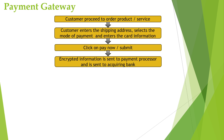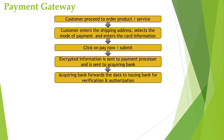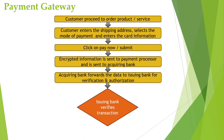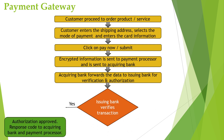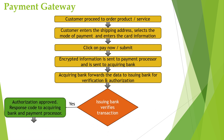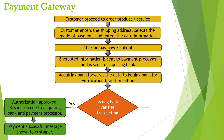Next, the acquiring bank forwards the information to the issuing bank to check if the customer has sufficient balance, and if available, it places a hold on the required amount. The issuing bank verifies the transaction, and if everything is correct and the customer has sufficient funds, the authorization is approved. A response code is sent to the acquiring bank, the payment is processed, and a success message is displayed to the customer.